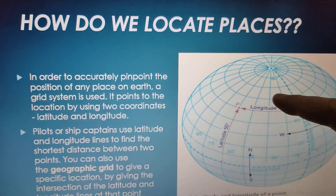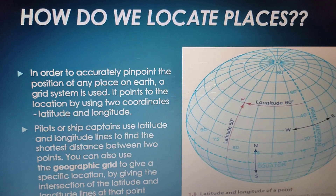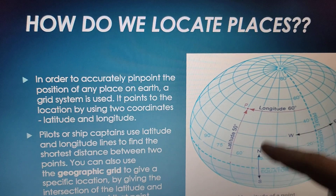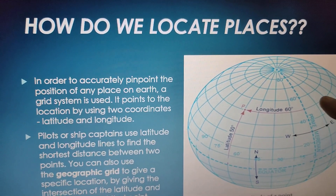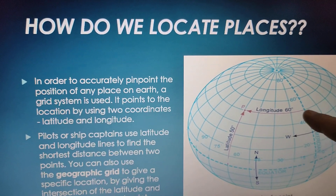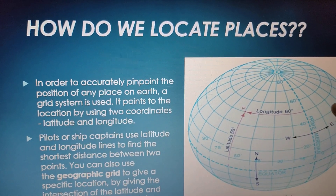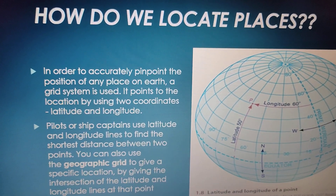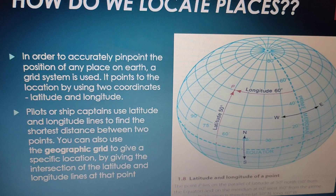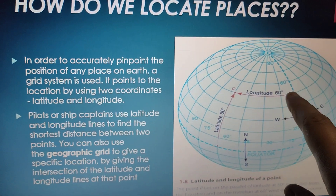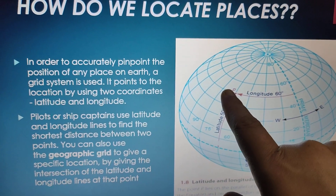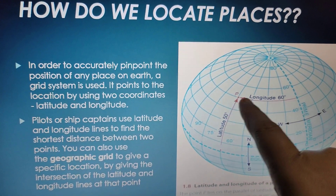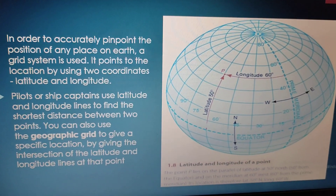Now if we talk about longitudes, they run in the north-south direction. But if we talk about the distance, the distance is measured in the east or west of the prime meridian — either in the east direction of the prime meridian or in the west direction of the prime meridian. So longitude, if you see, is 60 degrees, and latitude is 50 degrees. That is how the distance is measured.